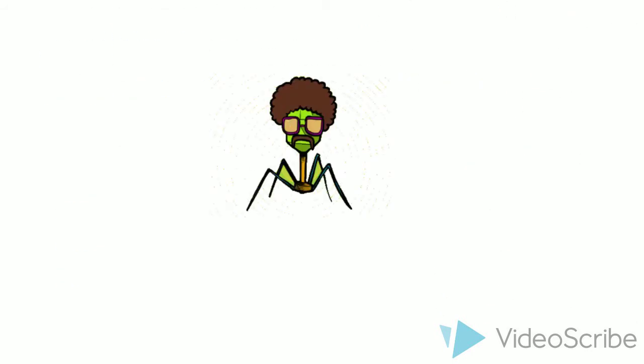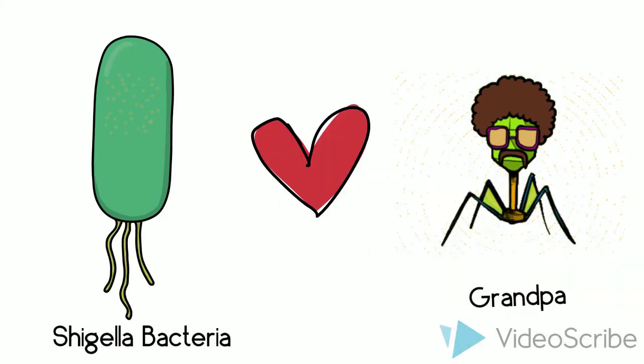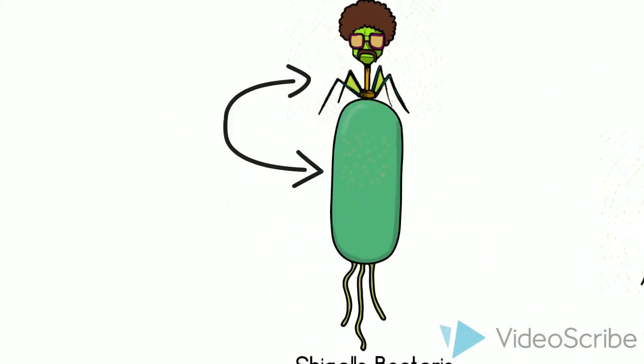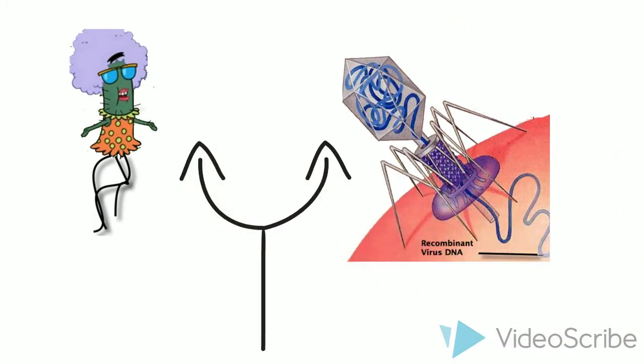My lineage apparently originated when my great-great-grandpa was transduced by Shigella toxin gene. A few years later, he tied the plasmid with my great-great-great-grandma, a non-pathogenic E. coli. And so, this is where my story begins.